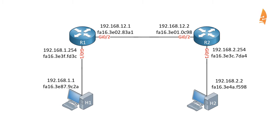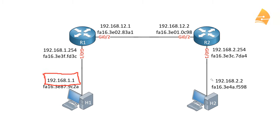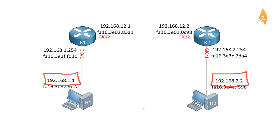I will explain everything step by step how an IP packet from host 1 makes it to host 2. So let's start with host 1. Host 1 is going to send an IP packet from its own address to its destination. Now host 1 will have to check and see if the destination is in its own subnet or outside its own subnet.